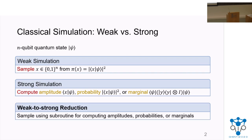How are they closely related? Well, weak and strong simulations are often related via a weak-to-strong reduction. That is, the sampling algorithm involves calling a subroutine for computing amplitudes, probabilities, or marginals. So weak simulation means sampling, strong simulation means computing these numbers, and weak-to-strong reduction means doing sampling using the ability to compute these numbers.